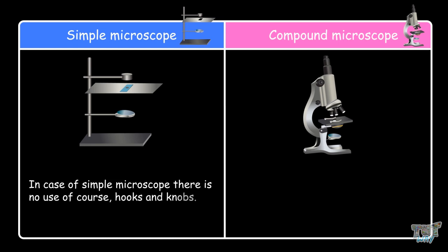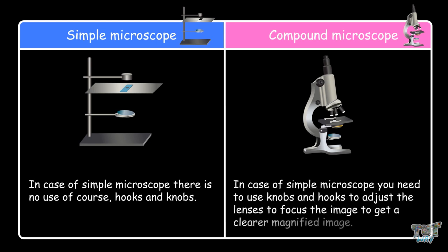In the case of a simple microscope, there is no use of coarse hooks and knobs. But in the case of a compound microscope, you need to use knobs and hooks to adjust the lenses to focus the image to get a clearer magnified image.